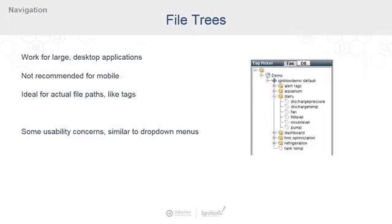Let's talk about file trees. The file tree is another classic component frequently used for navigation today. In general, they can be used for larger desktop-focused applications, but we really don't recommend them for anything that needs to be touch or mobile friendly. Those little arrow icons are really tiny touch points, which can be difficult to click even with a mouse sometimes. They do work well for actual file paths like tag paths in Ignition, but using them as a primary navigation pattern is generally discouraged because you can't see all the options present at once.